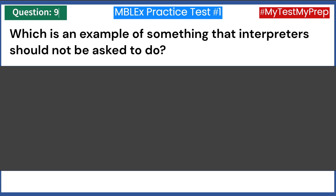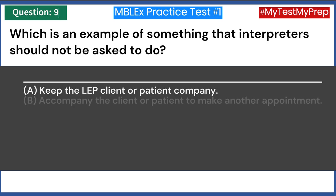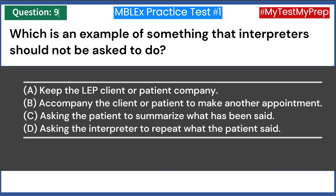Which is an example of something that interpreters should not be asked to do? A) Keep the LEP client or patient company. B) Accompany the client or patient to make another appointment. C) Asking the patient to summarize what has been said. D) Asking the interpreter to repeat what the patient said. Answer: A — keep the LEP client or patient company.